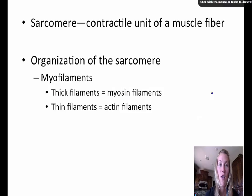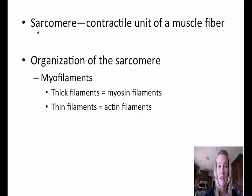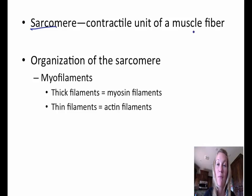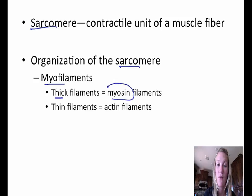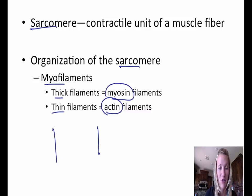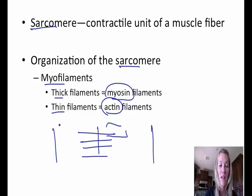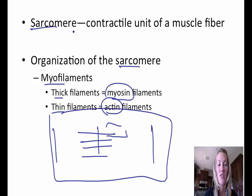Moving on to more terminology: that diagram you saw was a sarcomere. A sarcomere is the contractile unit of a muscle fiber. The sarcomere is organized as a myofilament that contains thick filaments, which are myosin, and thin filaments, which are actin. When you have the thick and thin filaments intertwined, one segment of that arrangement is called the sarcomere.